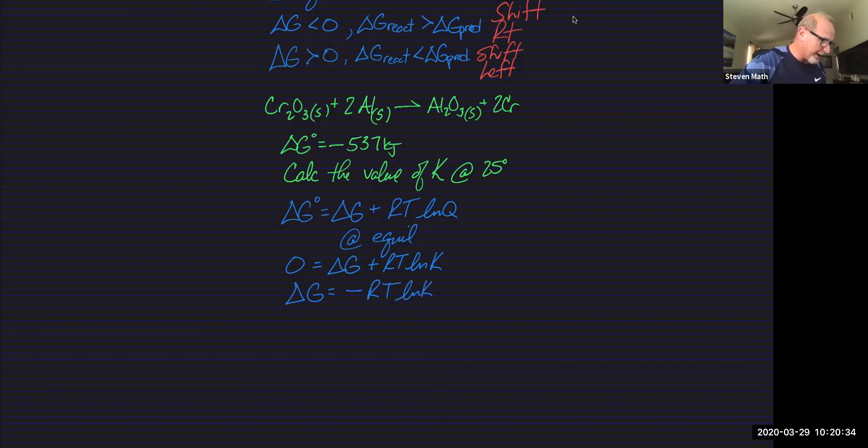And what we want to solve in this problem is for K. So ln K equals delta G over negative RT and so in this case